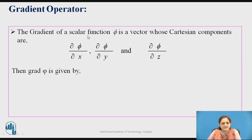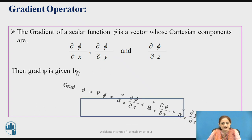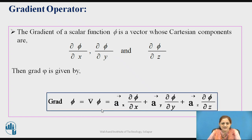The gradient of a scalar function phi is a vector whose Cartesian components are ∂phi/∂x, ∂phi/∂y, and ∂phi/∂z. The gradient of phi is given by multiplying with the del operator: grad(phi) = (∂phi/∂x) â_x + (∂phi/∂y) â_y + (∂phi/∂z) â_z.